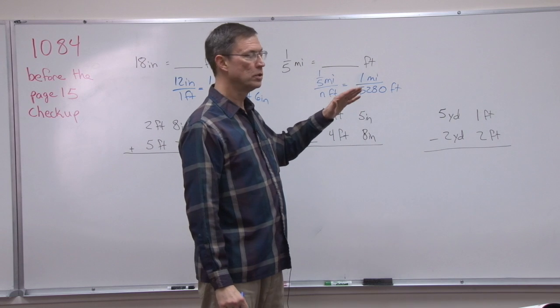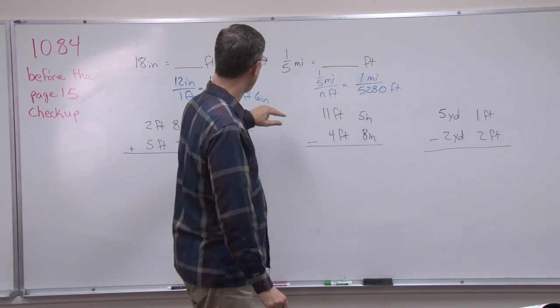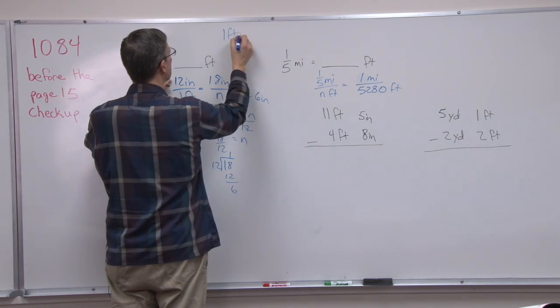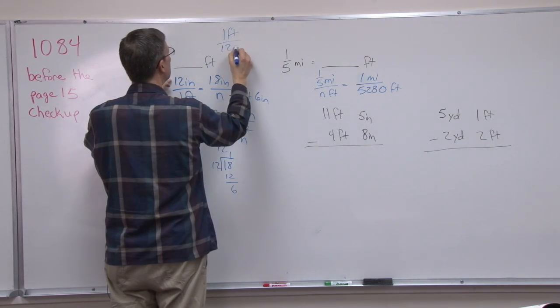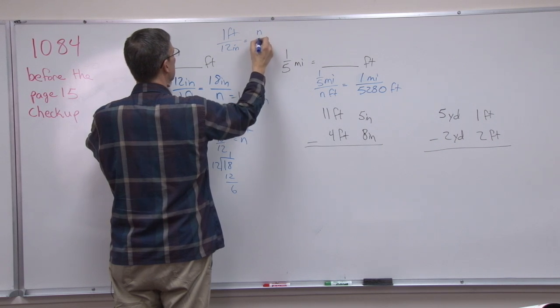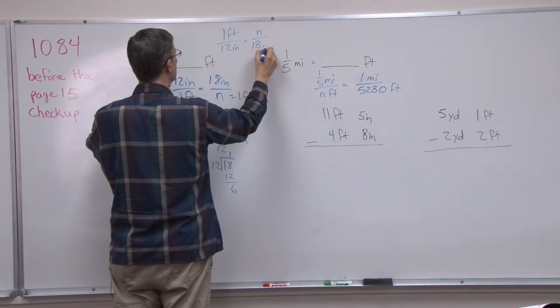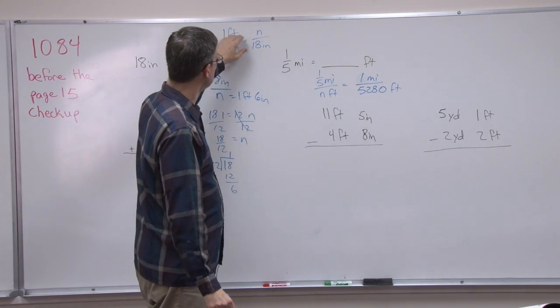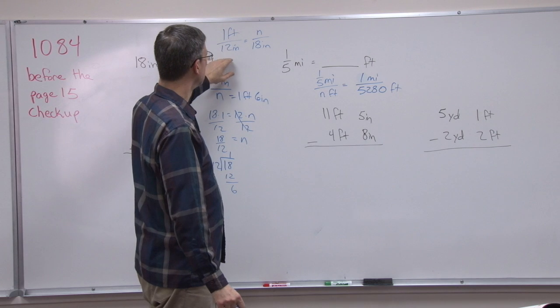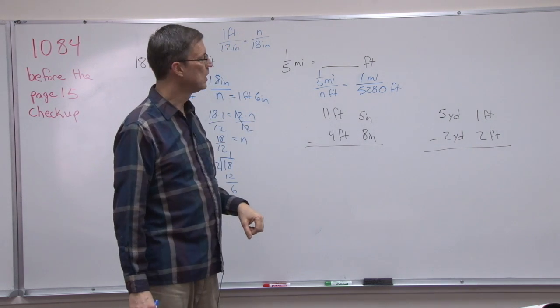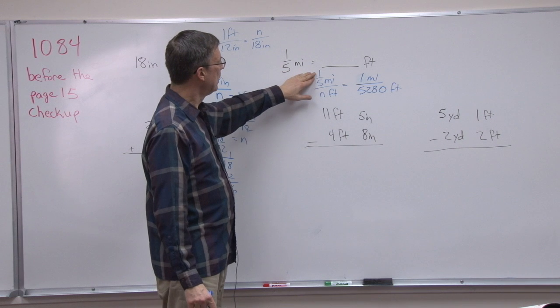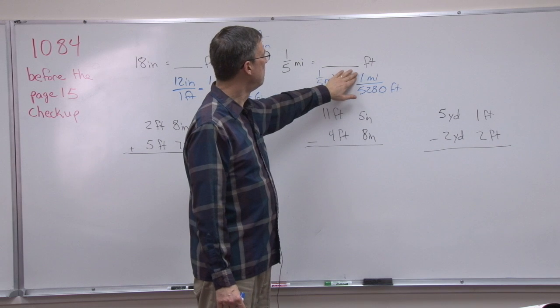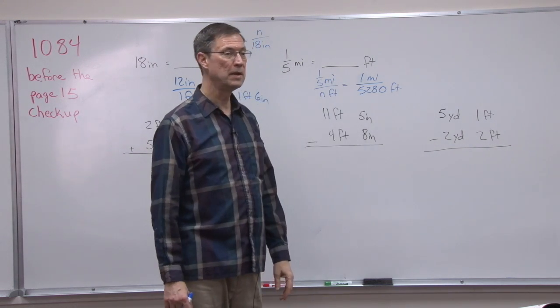Now it doesn't matter which one goes on top and which one goes on the bottom. And actually with this one over here, I could have done 1 foot over 12 inches and set that equal to n over 18 inches, and we would still solve it the same way. 18 times 1 equals 12 times n, and that's what we got here. So we have miles over feet, n means I don't know what it is, 1 mile over 5,280 feet.